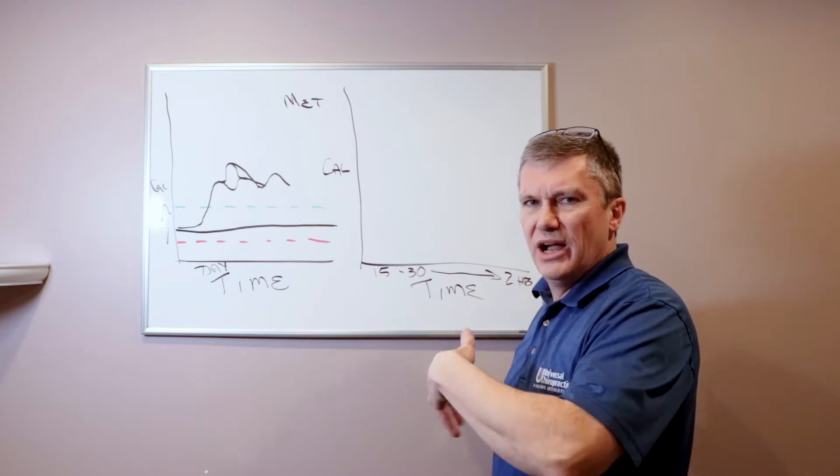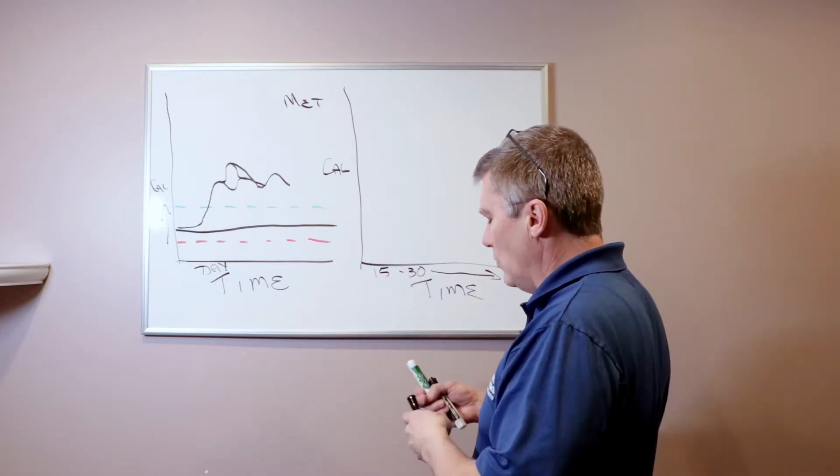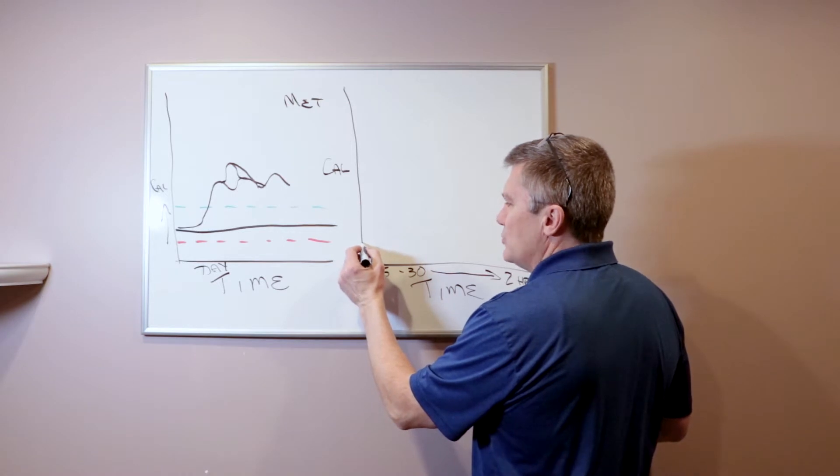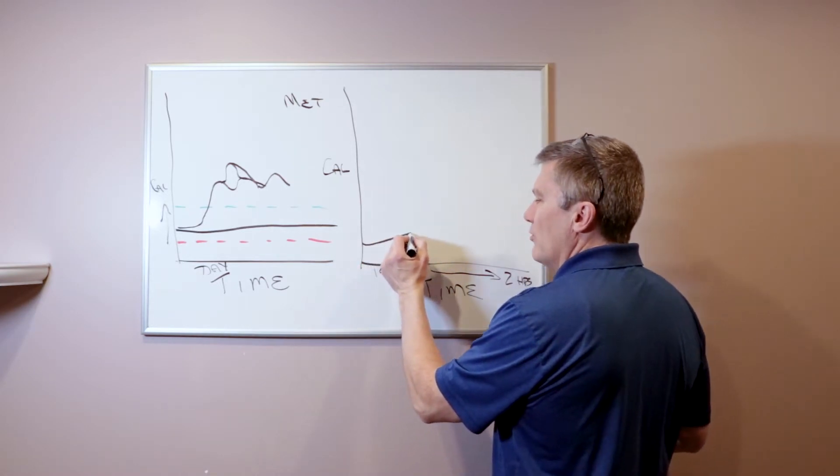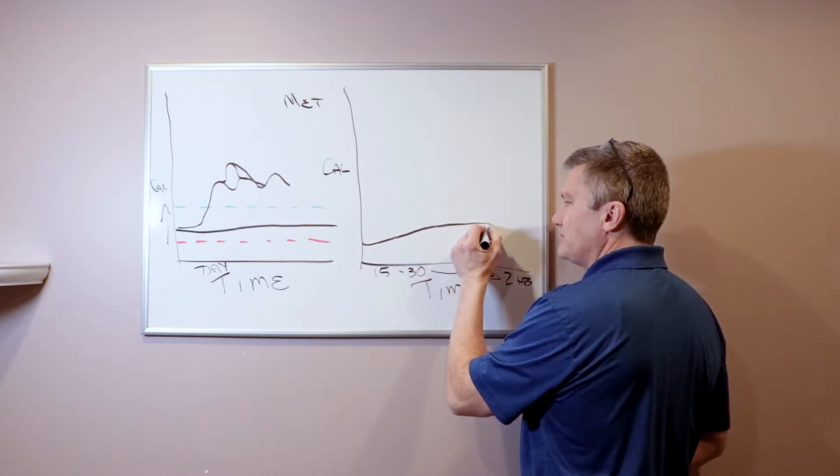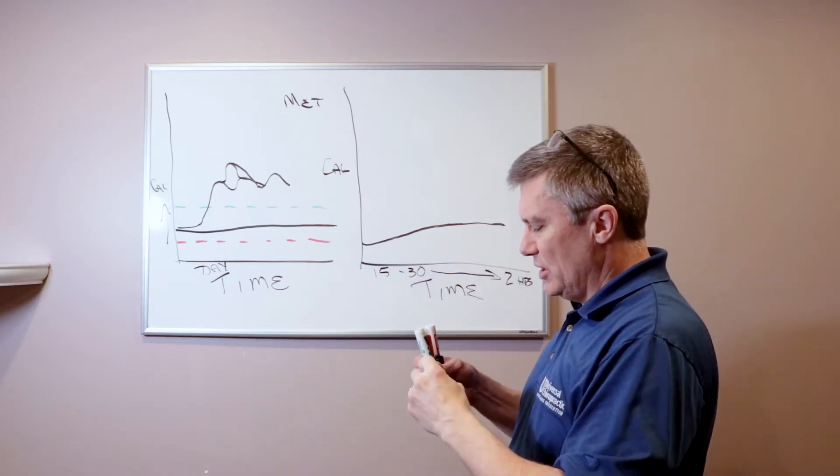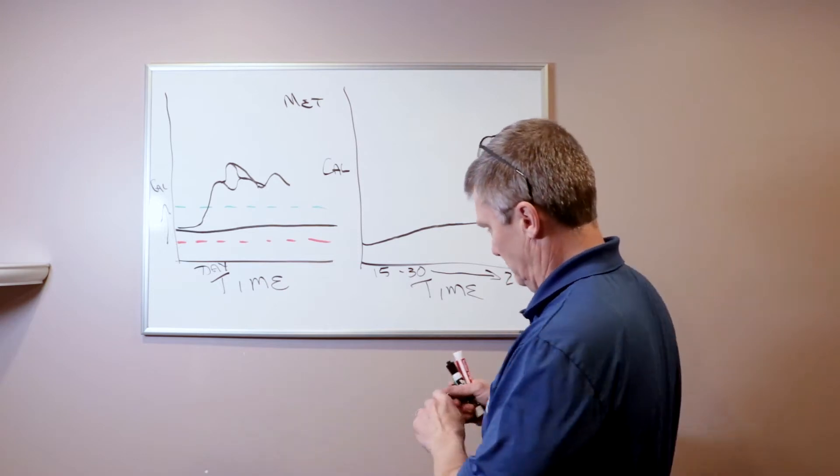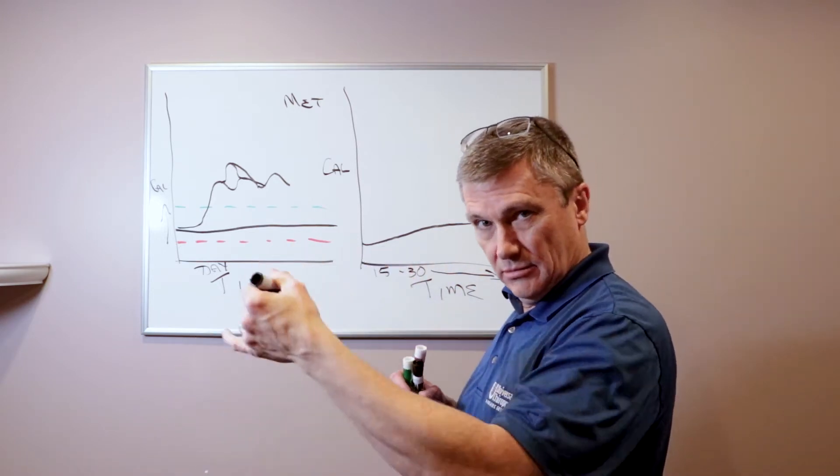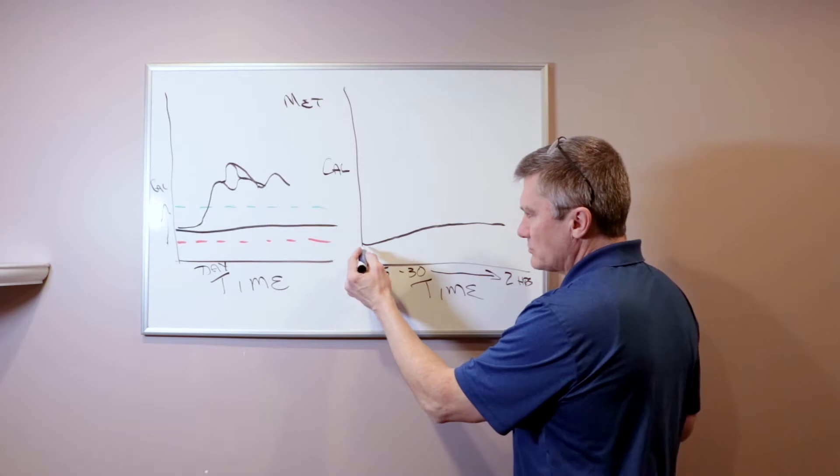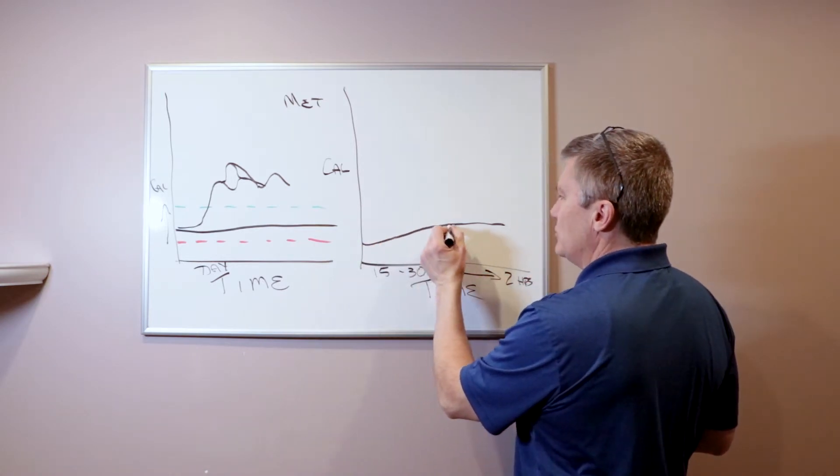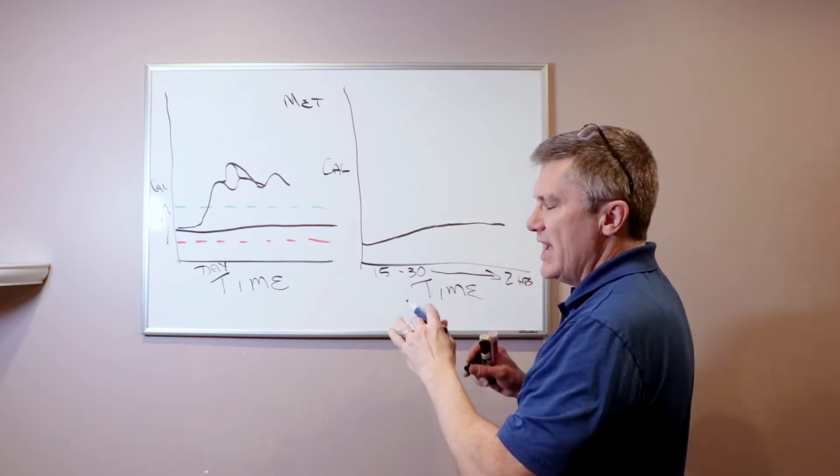What we want is we want foods that are absorbed very, very slowly over a long period of time. So if I eat oatmeal, an apple, I eat protein, different things, broccoli, cauliflower, carrots, low glycemic index foods, that will stay and be absorbed over a long period of time and we don't get those huge spikes.